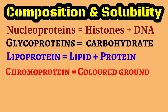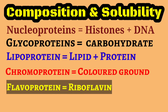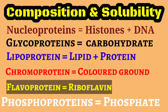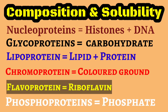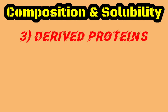Chromoproteins contain a colored group as the non-protein part. Examples are hemoglobin, where heme is the non-protein part and globin is the protein part, and flavoproteins, which contain riboflavin as the non-protein part and have a yellow color because of riboflavin. Phosphoproteins contain a phosphate group as the non-protein part — example is casein present in milk. Ferritin is a combination of iron plus apoprotein, where iron is the non-protein part.